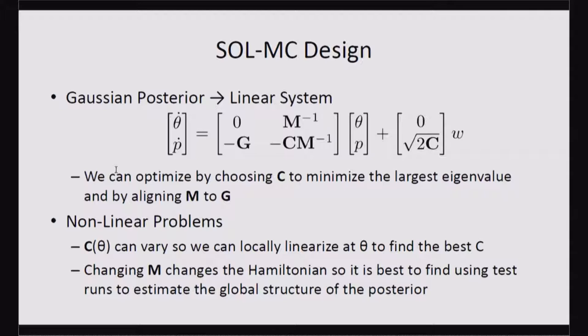So we're trying to match the global covariance structure of your posterior distribution. So by evolving your chain, you can adaptively learn that over time before you settle in and start actually sampling. So when you're in the burn-in stage, when you're still trying to converge to the stationary distribution.